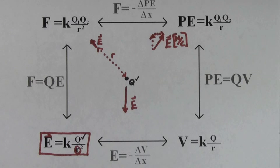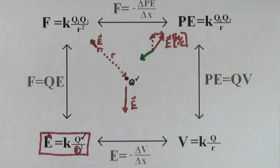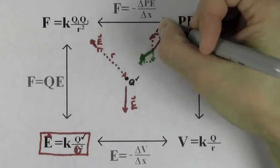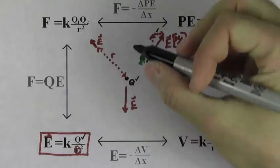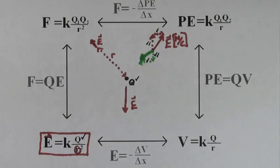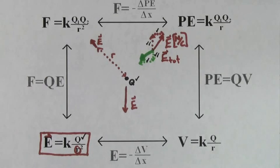If some other charge creates its own electric field contribution at that point in space, in order to find the total electric field, you have to break up both electric fields into components. You'd add up the X components, then add up the Y components, and use the Pythagorean theorem to find the size of the total electric field at that point in space.